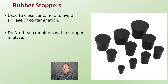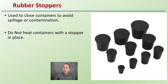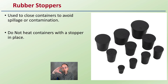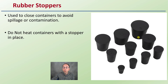Rubber stoppers are used a lot on test tubes and flasks. They simply act as a way to avoid spillage or contamination. You don't want to heat a test tube or flask with a rubber stopper because it creates essentially a closed container, but they are utilized particularly during the storage of certain chemicals.